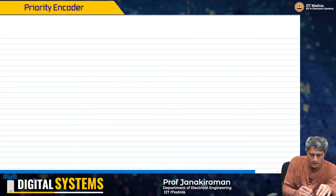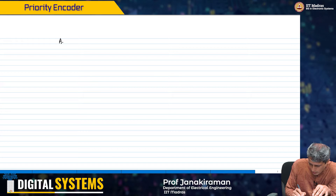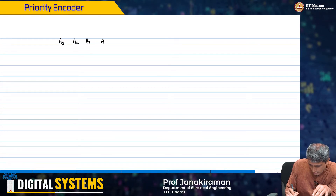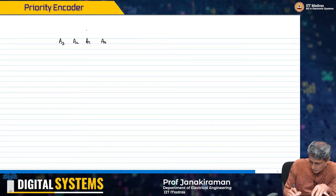Essentially, let us just look at the truth table once more carefully — A naught, my priority encoder.